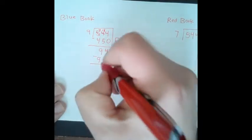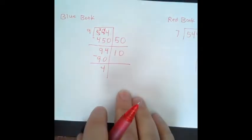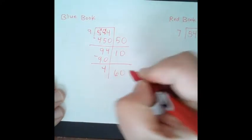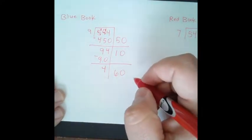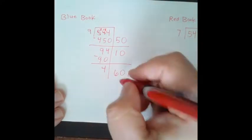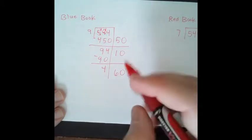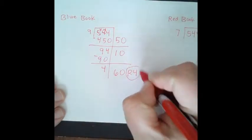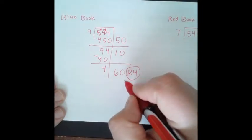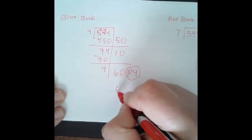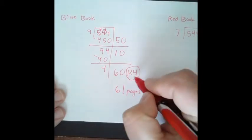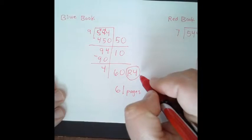So that leaves us with 4. We can't divide any more. So we're going to have 60 pages with a remainder of 4. Now, when we're thinking about our remainder, we're going to have to put these 4 leftovers into a page. So instead of using 60 pages, we're going to need to use 61 pages because we need to put these 4 pennies in the book as well.